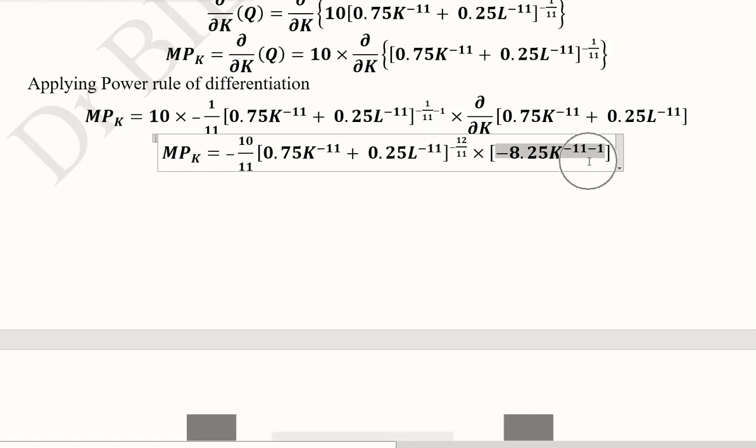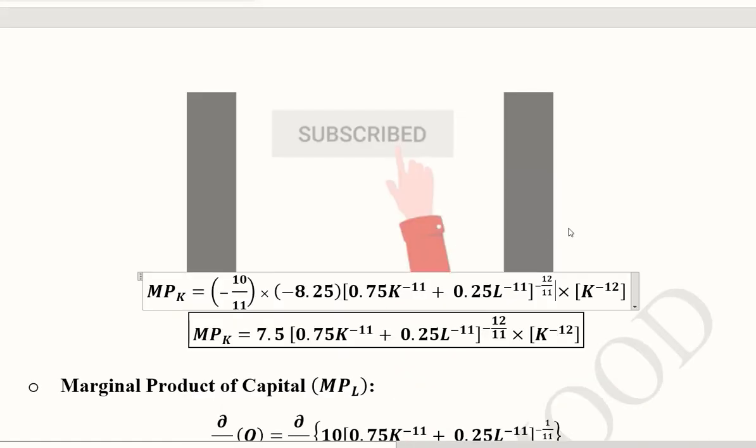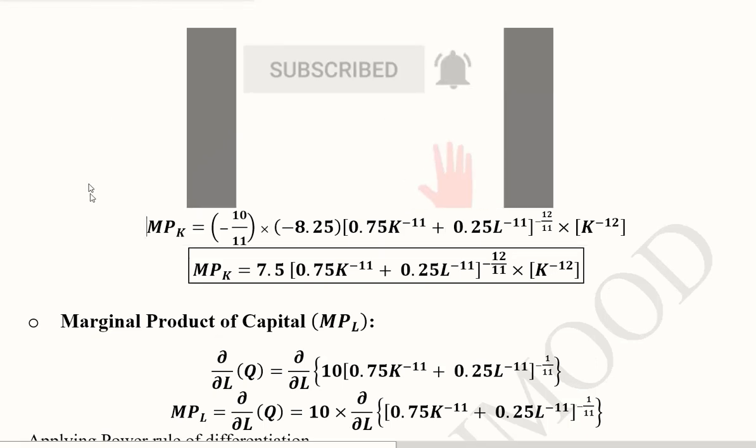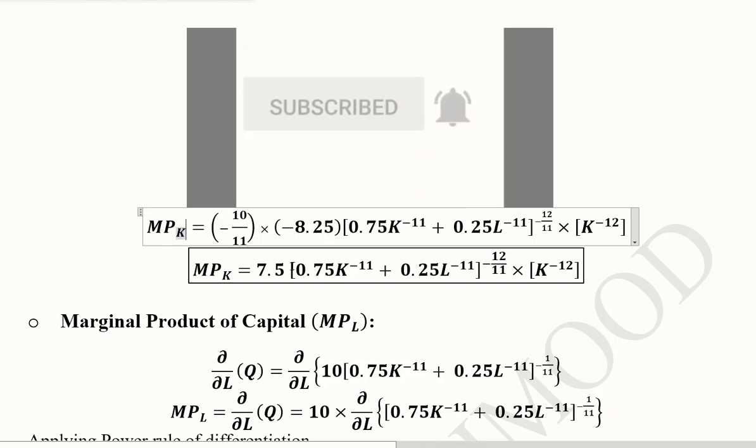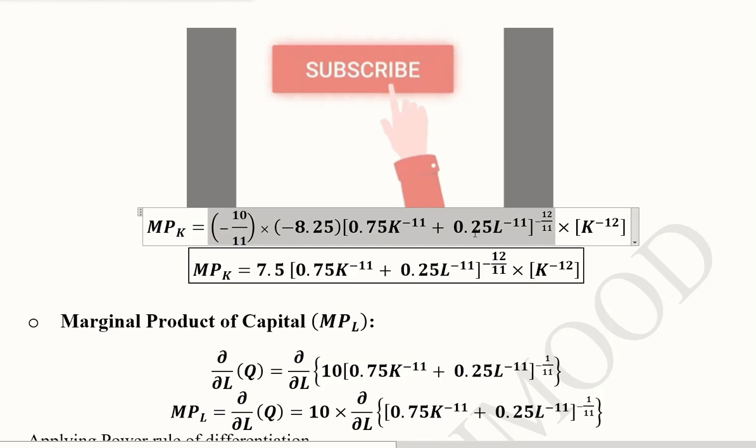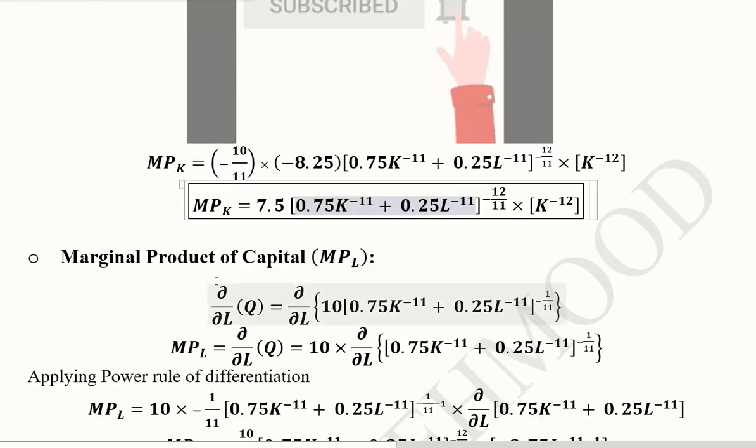This is the derivative of the expression and again the power rule is applied here. Now we have MPK and we are going to simplify this further, and this simple algebra will lead us to this form.